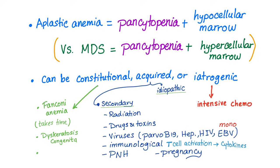Notice that's different from MDS — myelodysplastic syndrome — where there is pancytopenia with a hypercellular marrow. Please note that aplastic anemia and MDS are closely associated; they can occur together.